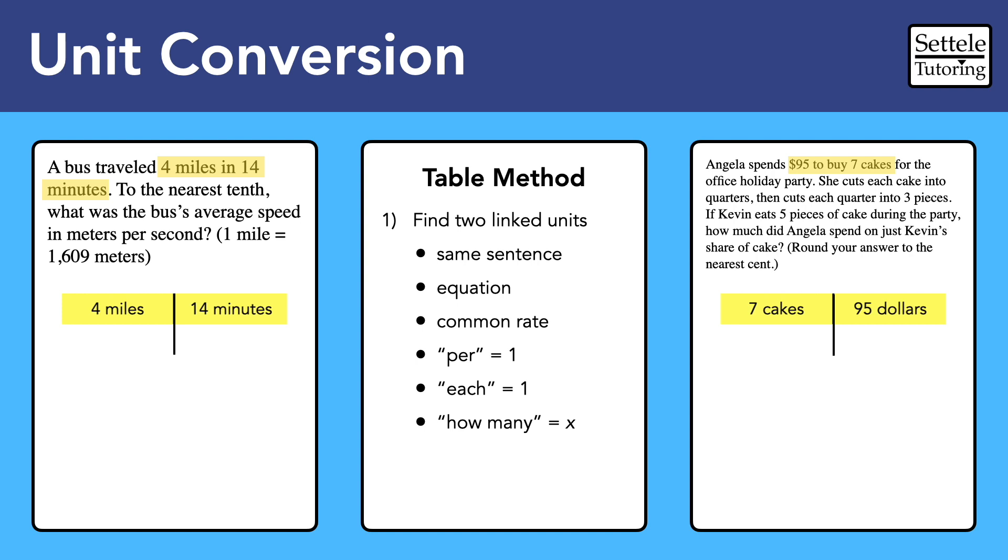Now go find another pair of units. Try to find a pair that includes one of the units that you just wrote in the table. When you add the new pair to the table, make sure that any matching units are on opposite sides. When a unit appears in both columns, we can cross it out.